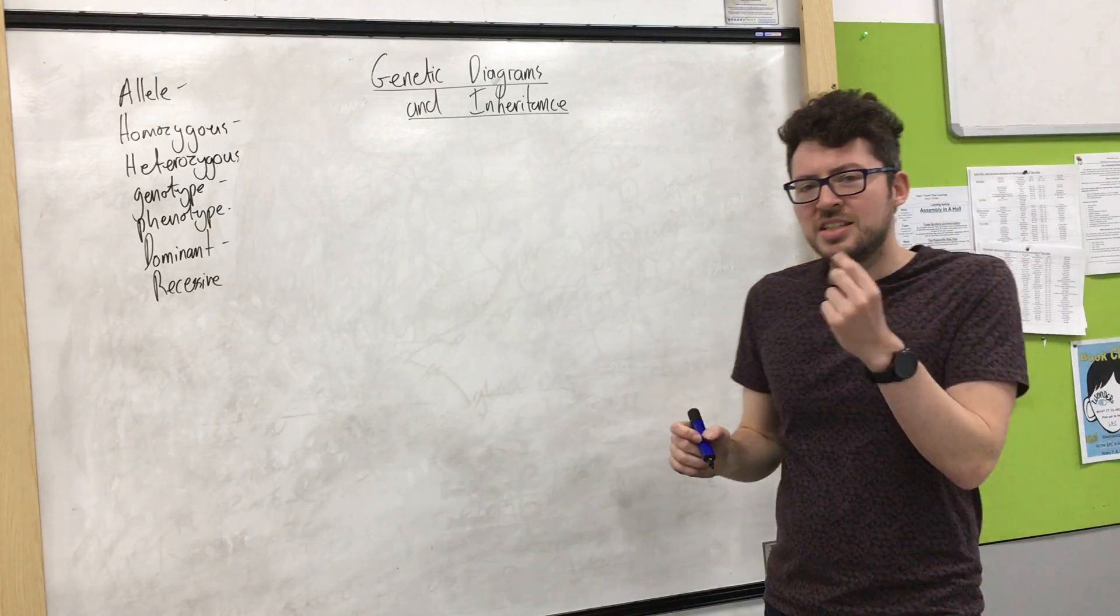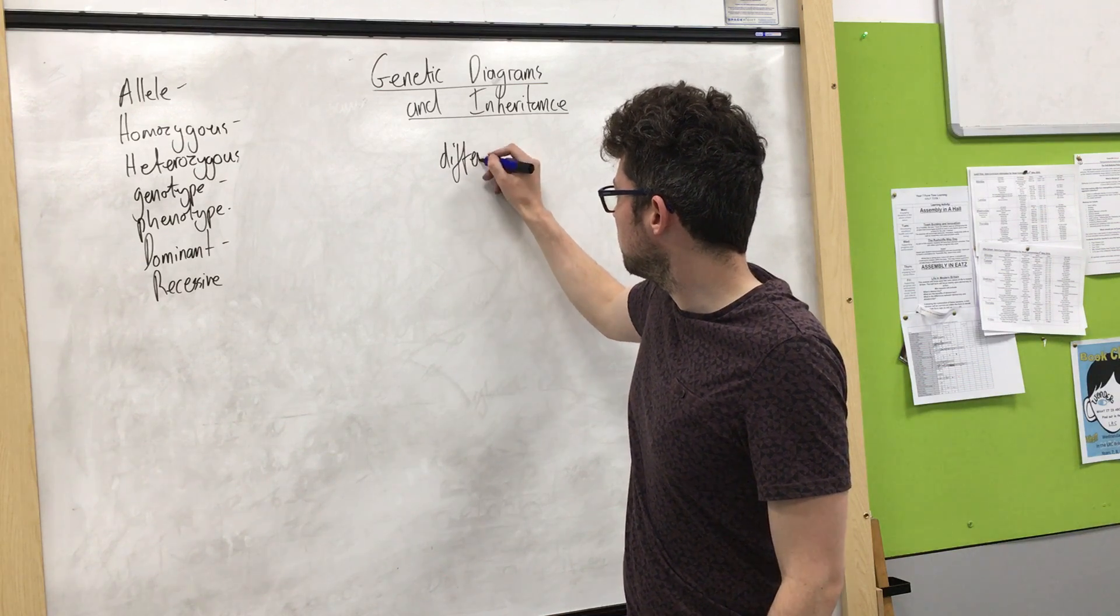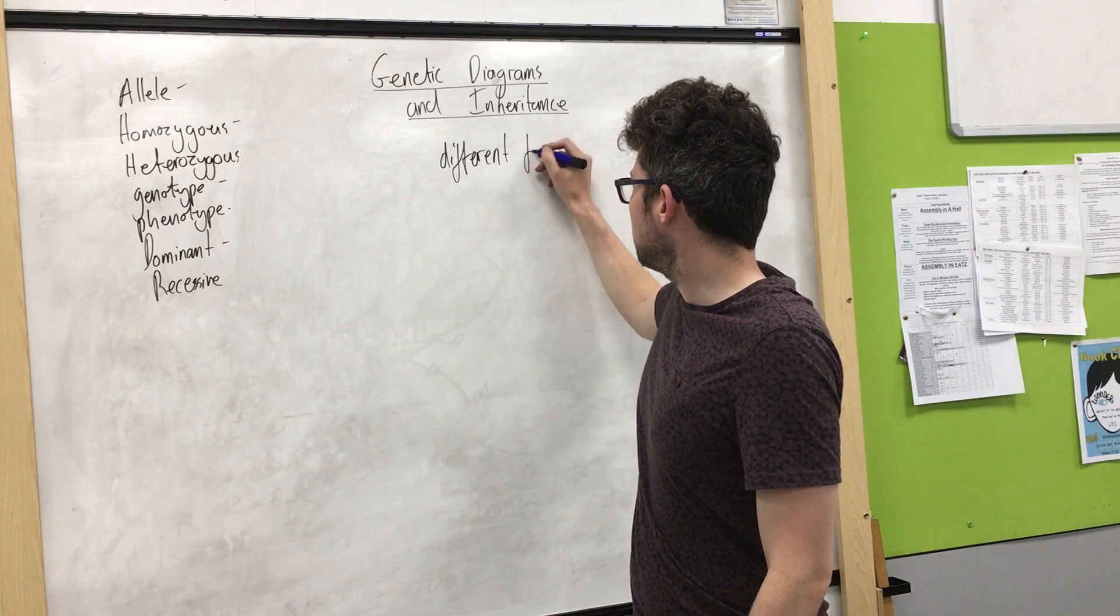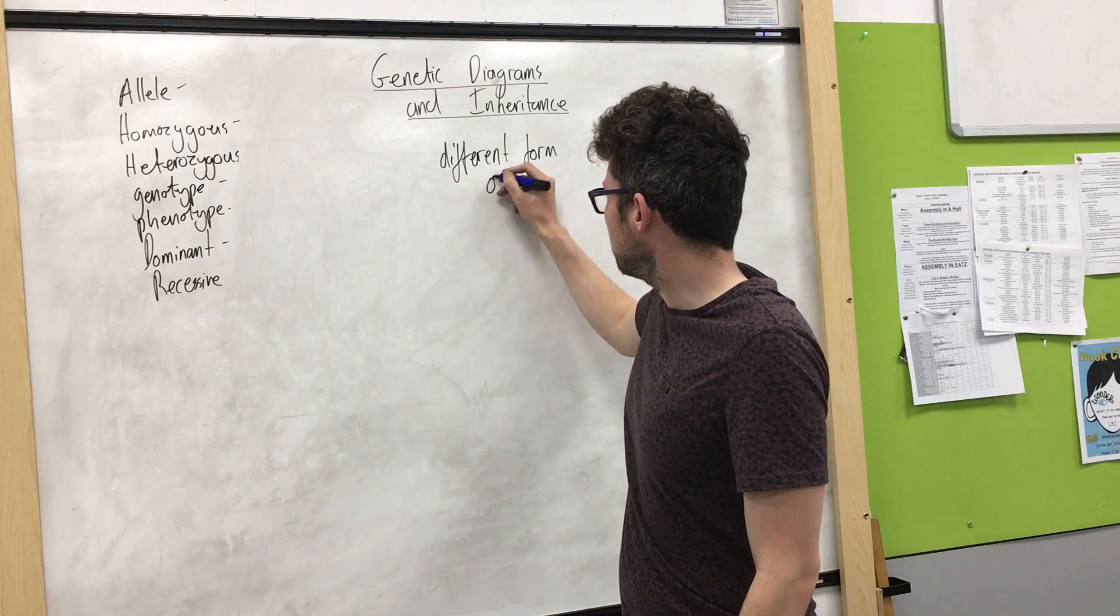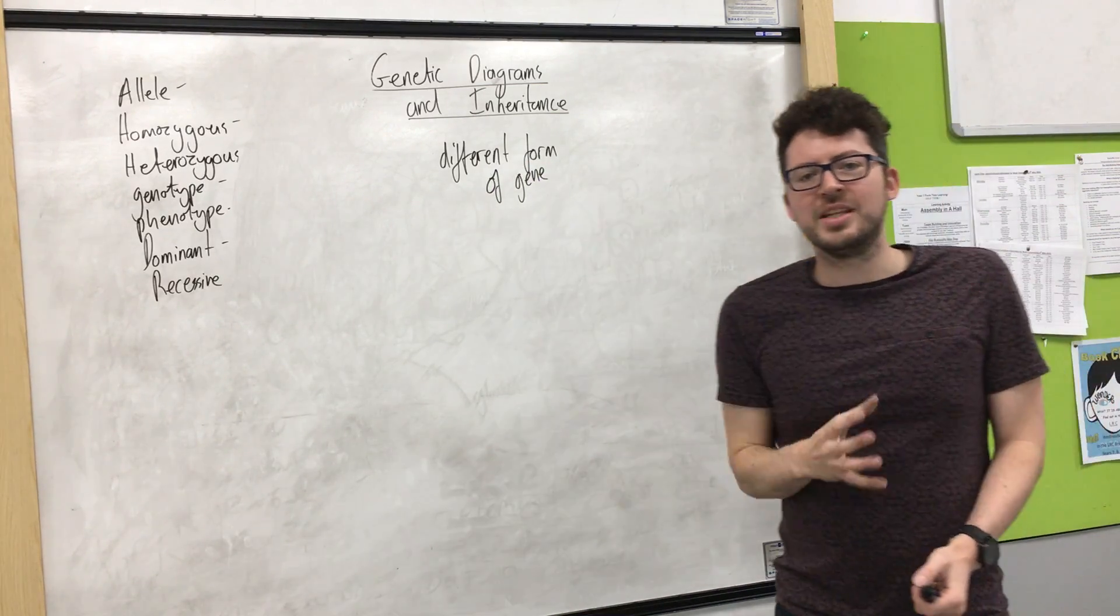Now an allele is just a different form of the same gene. Now this is much easier to explain using an example.